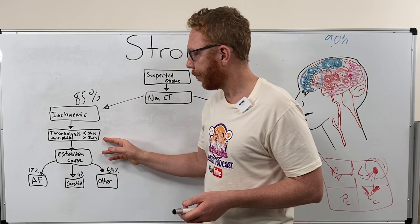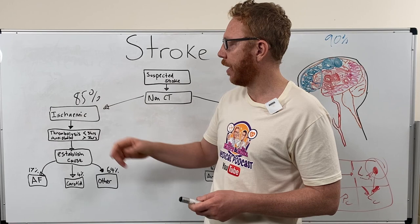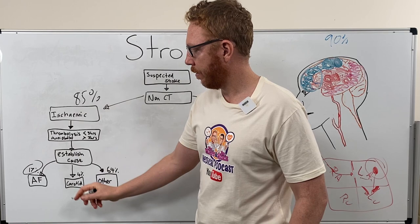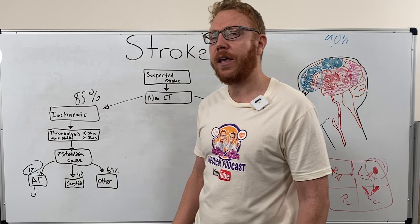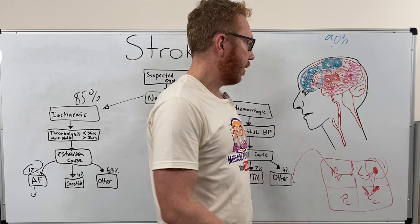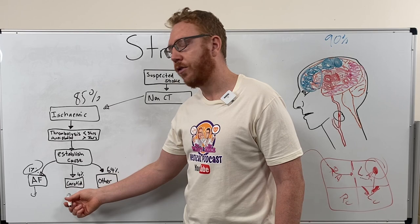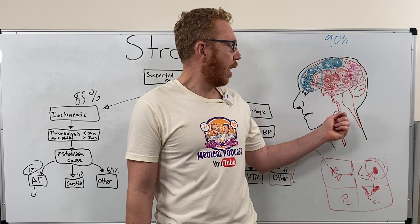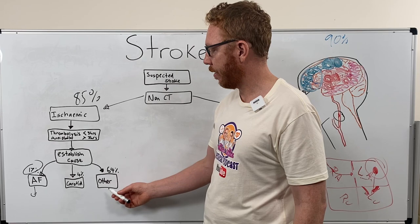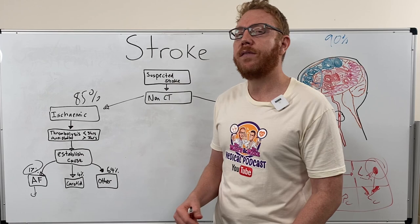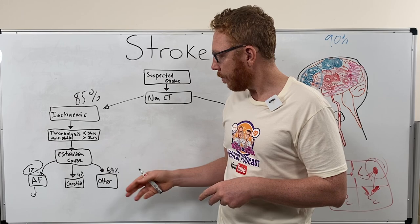Next step is to establish the cause behind the ischaemia. Of the 85% of strokes that are ischemic, 17% is coming from atrial fibrillation — treatment there would be warfarin. 4% is from carotid plaques, so a vascular review would be useful to mitigate further problems. And 64% — the vast majority — come from other causes, such as coagulopathies where the blood is clotting too quickly, systemic causes, or other heart-related effects.